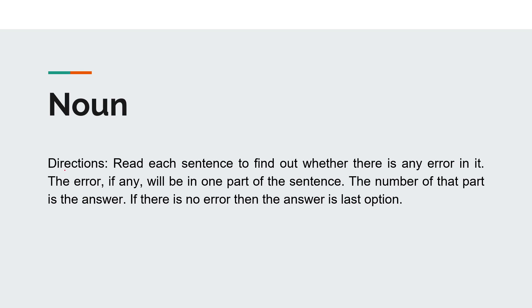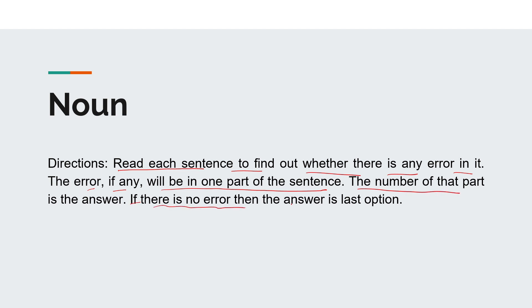Hello guys, this is Pawan Kumar and you are watching Archbiz Studies. In this video we are going to see some jumbled sentences based on the noun. Directions for the questions: read each sentence to find out whether there is any error in it. The error, if any, will be in one part of the sentence. The number of that part is the answer. If there is no error, the answer is the last option. Now let's see the questions.